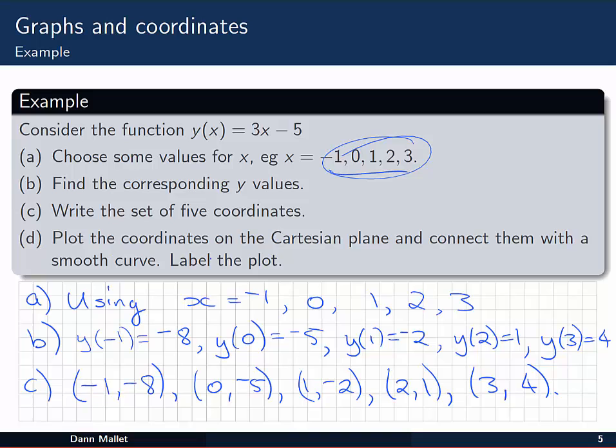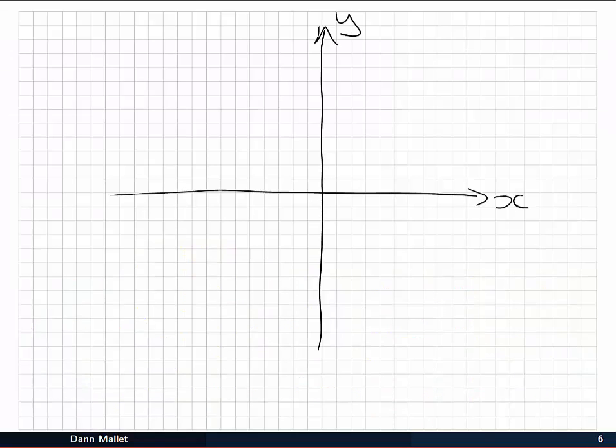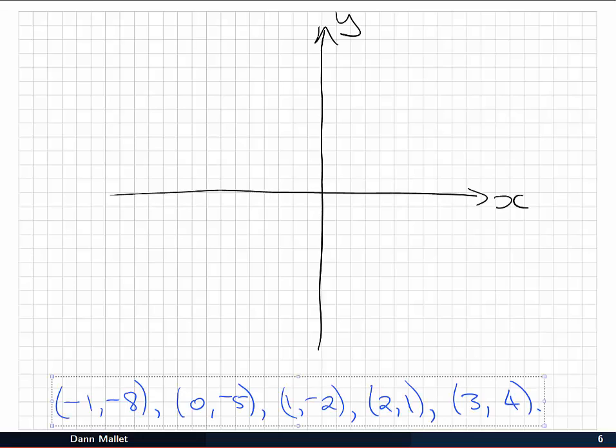Next we're asked to plot those coordinates on the Cartesian plane and connect them with a smooth curve, and then finally label the plot. So I've started off just by drawing my two number lines or axes: the x horizontally for the independent, and y vertically for the dependent values. I've pasted the coordinates we're going to work with down at the bottom so that I know what kind of values I need for x and y.